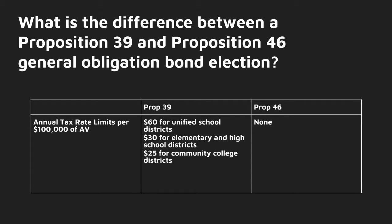Prop 39 also has tax rate limitations: $60 per $100,000 for unified school districts, $30 for either elementary or high school districts, and $25 for community college districts. Proposition 46 elections have no tax rate limitations.